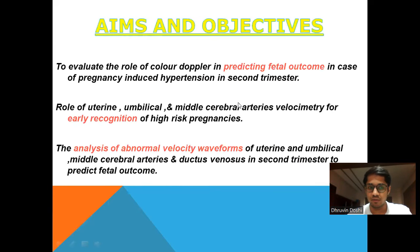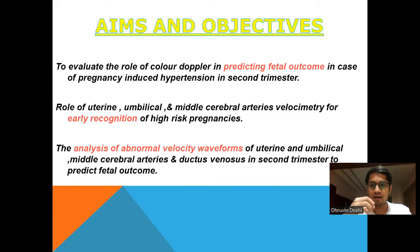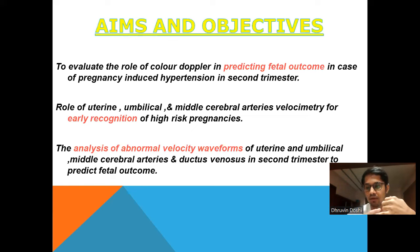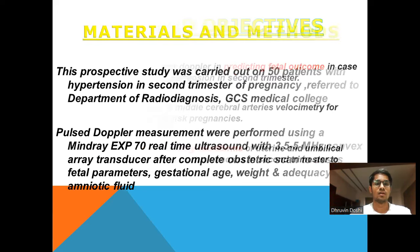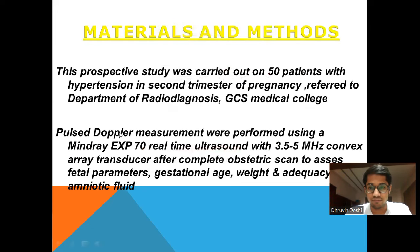My aims and objectives are to evaluate the role of color Doppler in predicting fetal outcome in cases of pregnancy-induced hypertension in the second trimester, and to study the role of uterine, umbilical, and MCA artery velocimetry for early recognition of high-risk pregnancies, and to analyze abnormal velocity waveforms of umbilical, uterine, MCA, and ductal stenosis in the second trimester to predict fetal outcome.